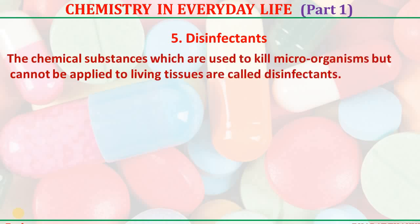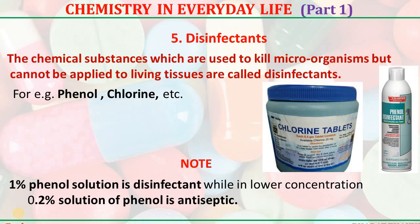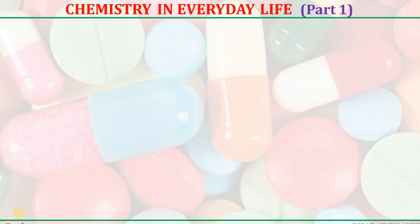Disinfectants — the chemicals which are used to kill microorganisms but are different from antiseptics because they cannot be applied on living tissues. For examples, phenol, phenyl, etc. A 1% solution of phenol acts as a disinfectant, while at a lower concentration of 0.2% solution, phenol can act as an antiseptic.